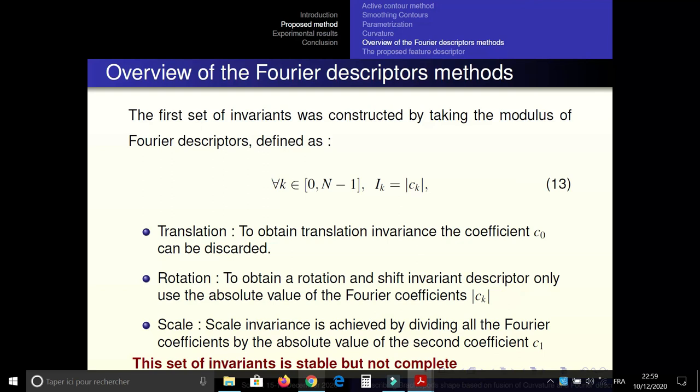The first set of invariants was constructed from the Fourier coefficient by taking the modulo of Fourier descriptor defined as follows. This invariant is invariant under translation, rotation, and scaling. But this set of invariants is stable but not complete in the sense defined by Granlund.